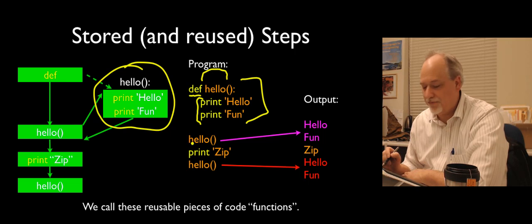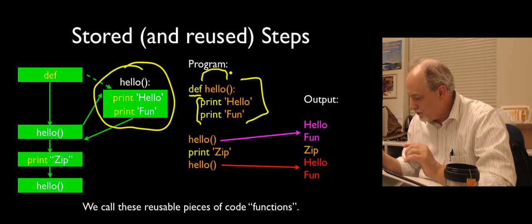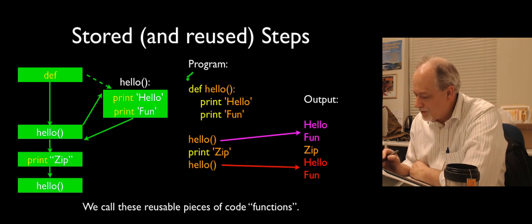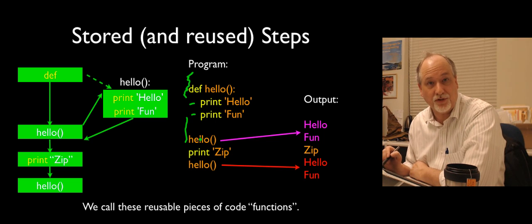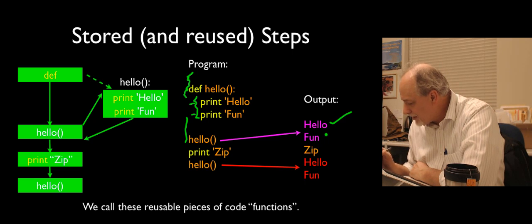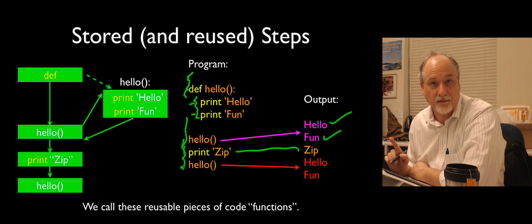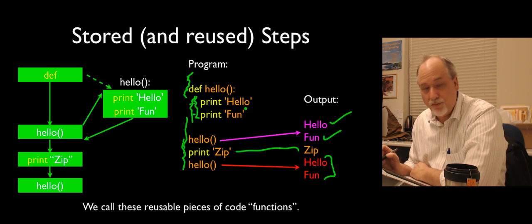This is the store part. The reuse part is we then have extended Python — we can now call our bit of code. We say hello with parentheses, and that says: remember that code I put in there under the name hello? Run it now. If I watch what Python does from the beginning, it reads and goes, you're defining a function named hello — great, I'll remember that. Then when we say hello(), it runs those stored lines and out comes hello fun. Then it runs print zip. Then we can call hello again — we stored it once and can reuse it as many times as we want.